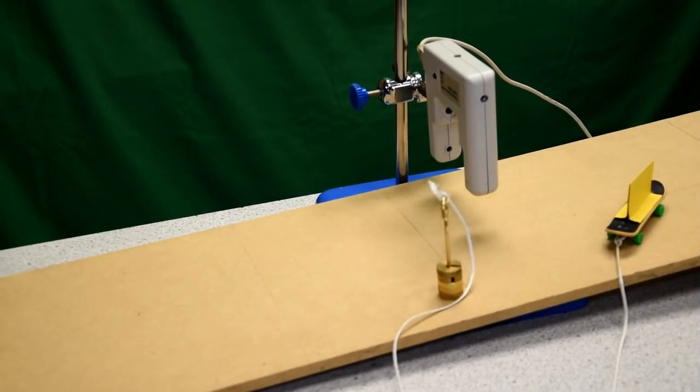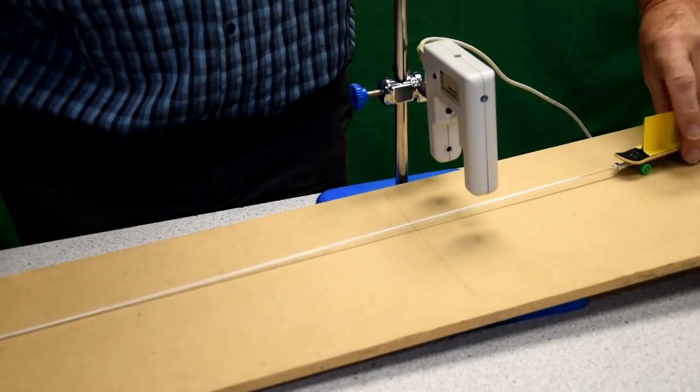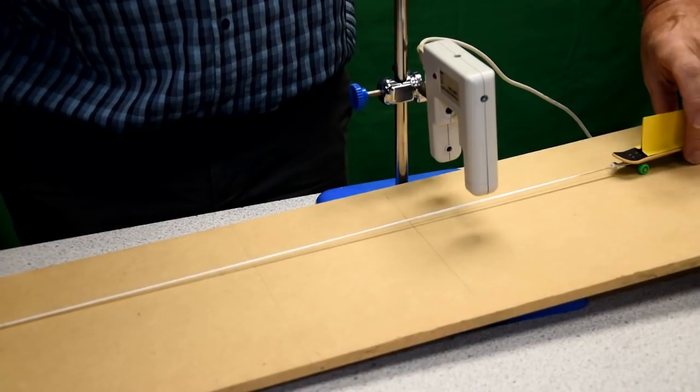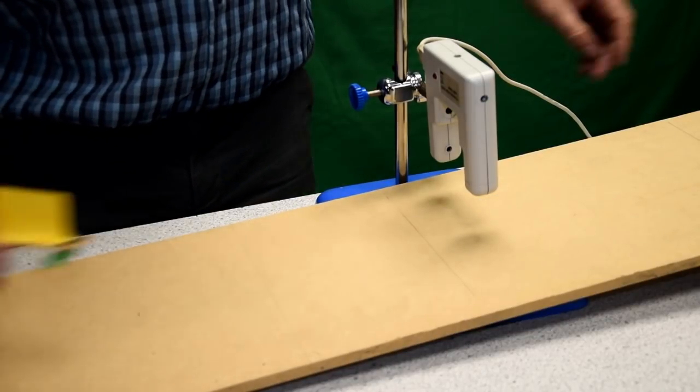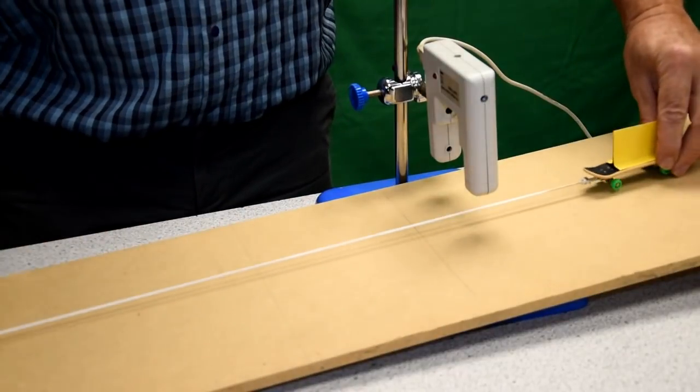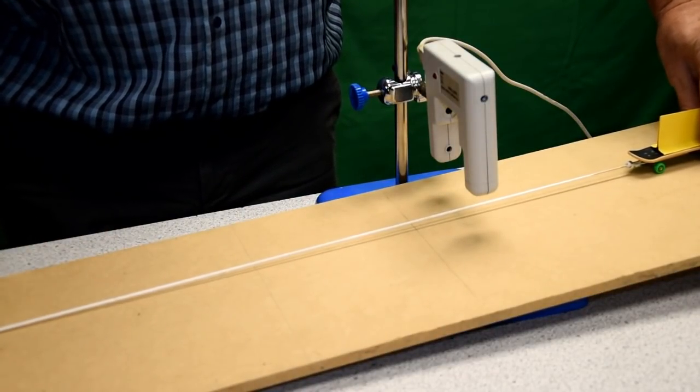The weight associated with the falling mass provides a constant force, and we make sure to release the trolley from the same place each time. The reliability of any experiment is improved by repeating the results.